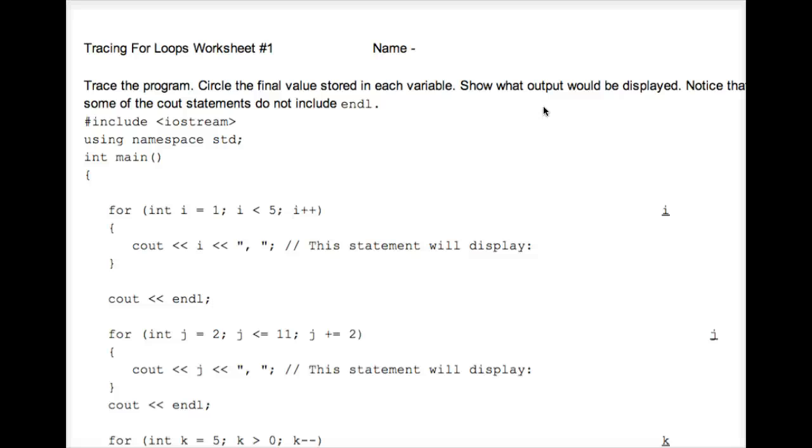Let's do some exercises from Tracing For Loops Worksheet Number 1. Let's start with this first for loop. We have the loop variable i. It's okay to use single letters as variable names in for loops for good style. In fact, it's very traditional to use the variable name i.